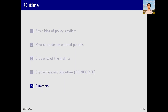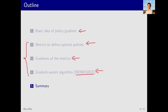In summary, this lecture introduced policy gradient methods. The core idea is straightforward: define an objective function, compute its gradient, and optimize using gradient ascent. While the idea is simple, every step — the objective function, gradient derivation, and algorithm derivation — may be non-trivial. Today we introduced REINFORCE, the first policy gradient algorithm in our course. In the next lecture we will delve into Actor-Critic methods.